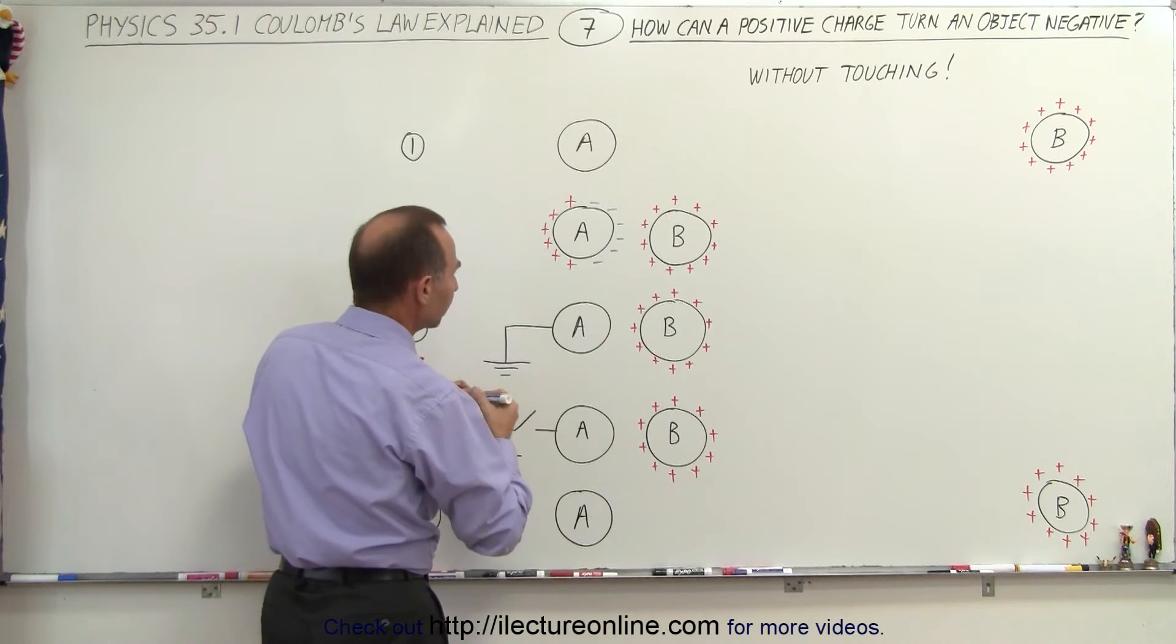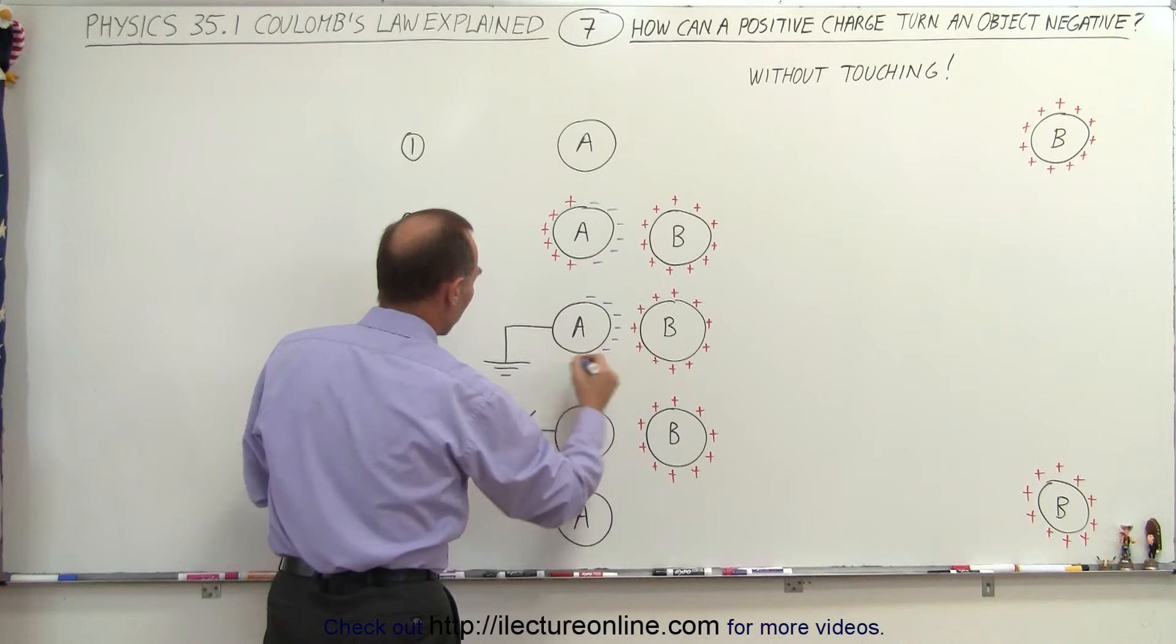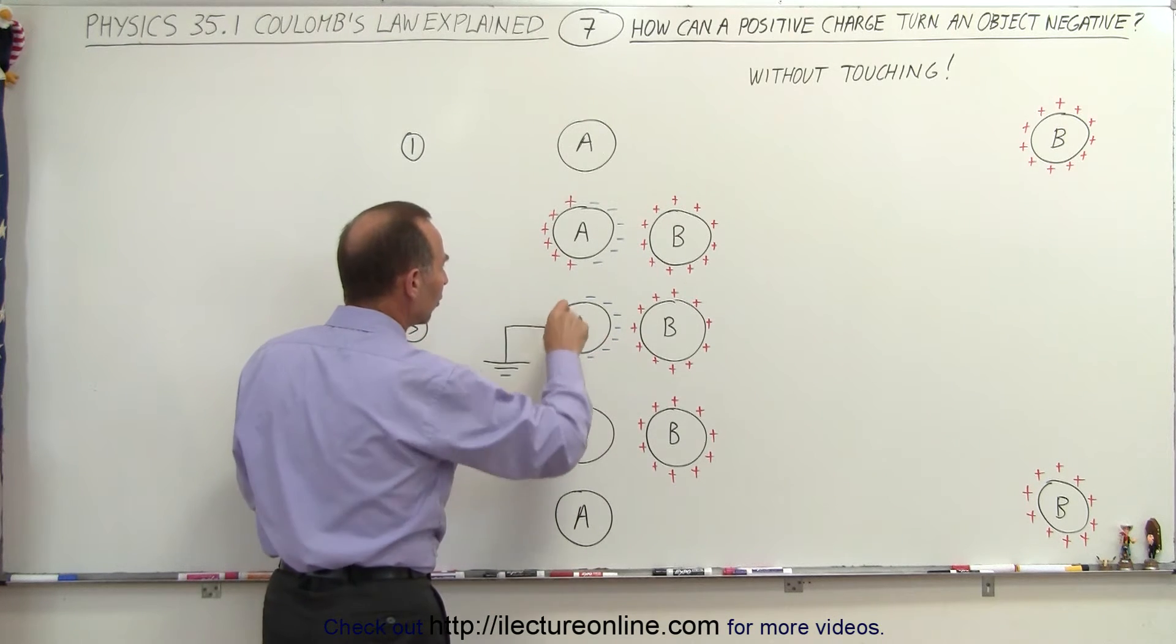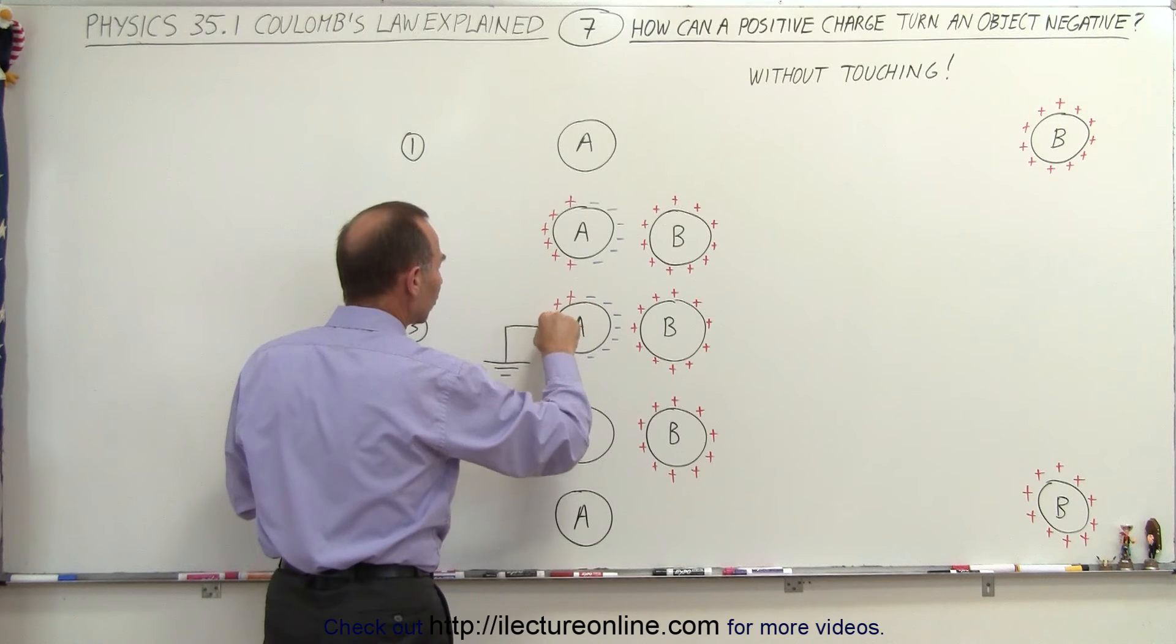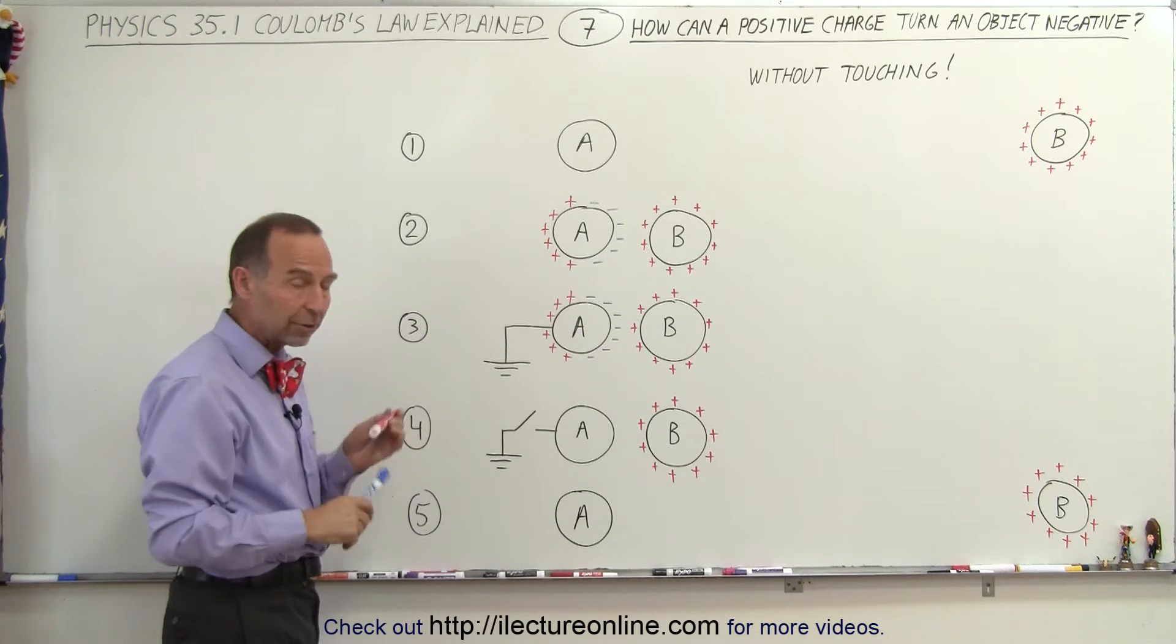then what happens is you'll have this side of the sphere still negatively charged, you'll have this side of the sphere still positively charged, but these positive charges on the left side of the sphere will attract the negative charges that are in the ground.